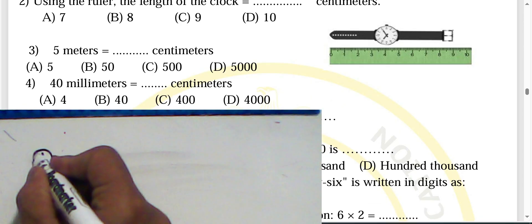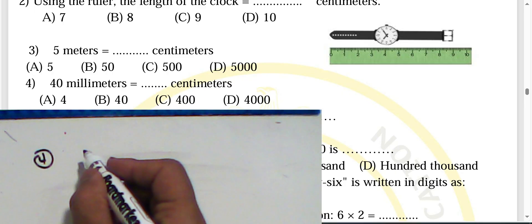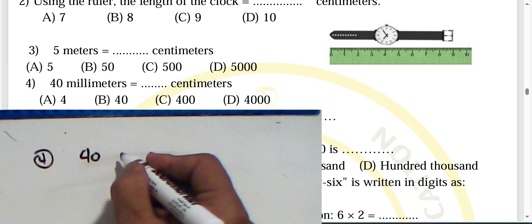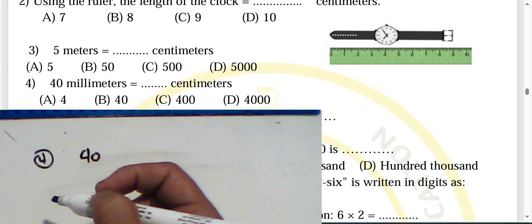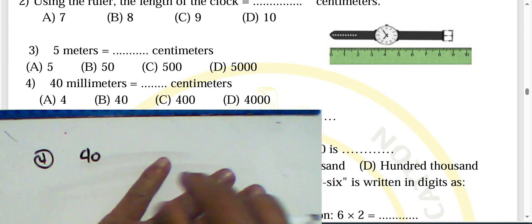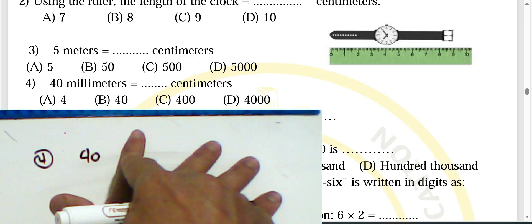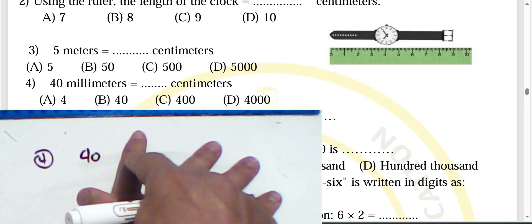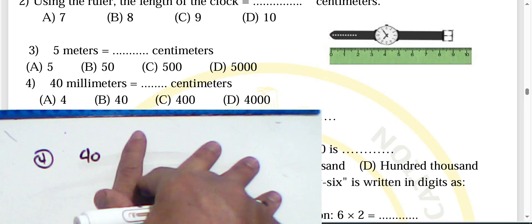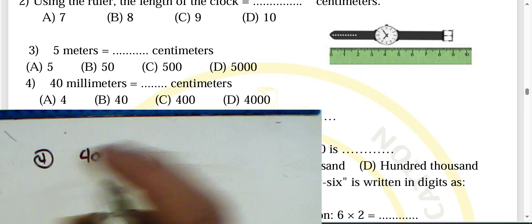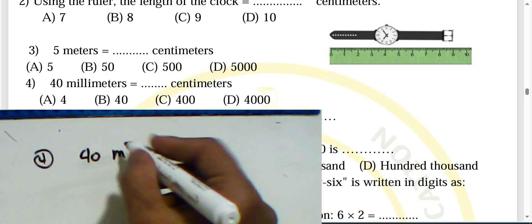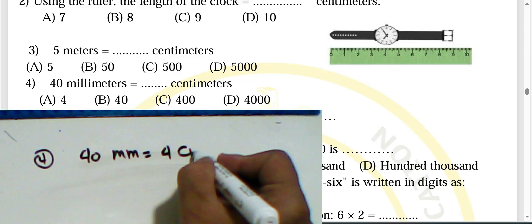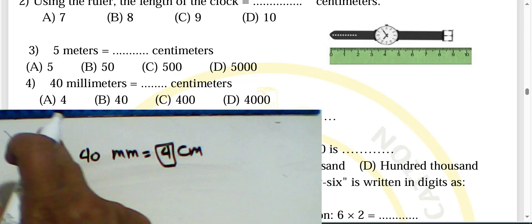Question four: 40 millimeters equals how many centimeters? To convert from millimeters to centimeters, divide by 10. So 40 millimeters is equivalent to four centimeters — choose letter E.